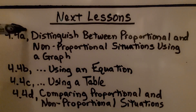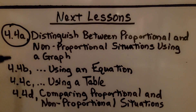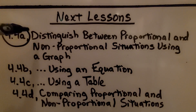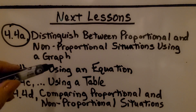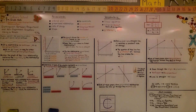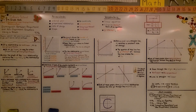We're finished with part A. We're going to move on to part B, which is distinguishing between proportional and non-proportional situations using an equation. I hope I explained this well and that you understand. Hit that like button so I know — it's the only way I can tell if you really understood. Join me for the next lesson. Bye!